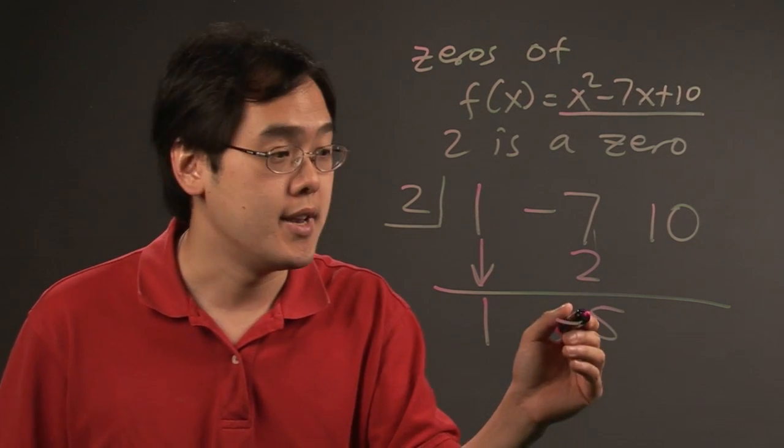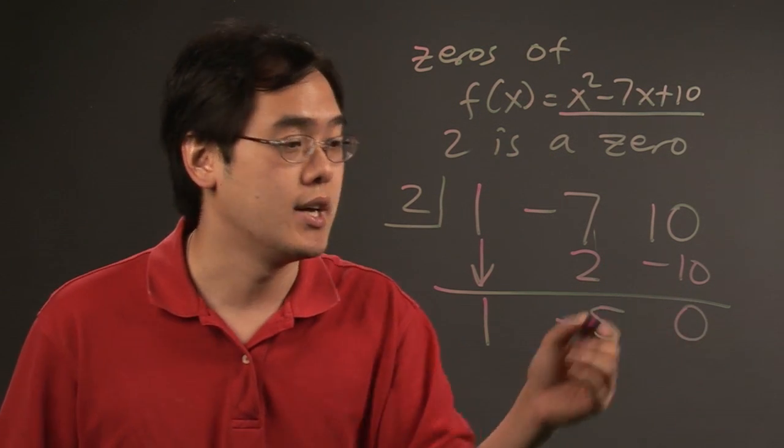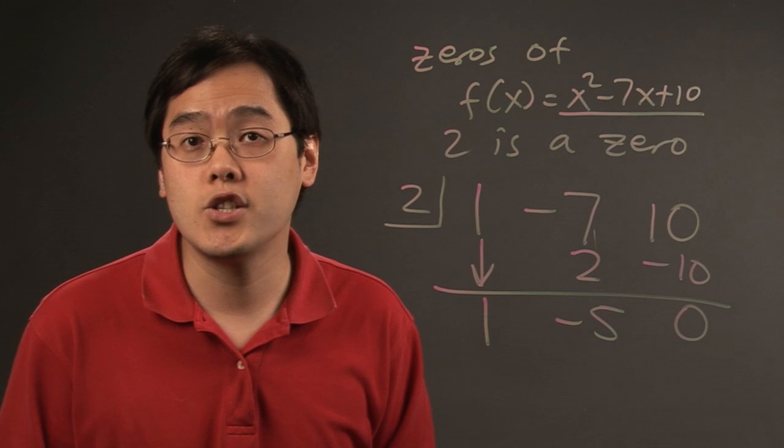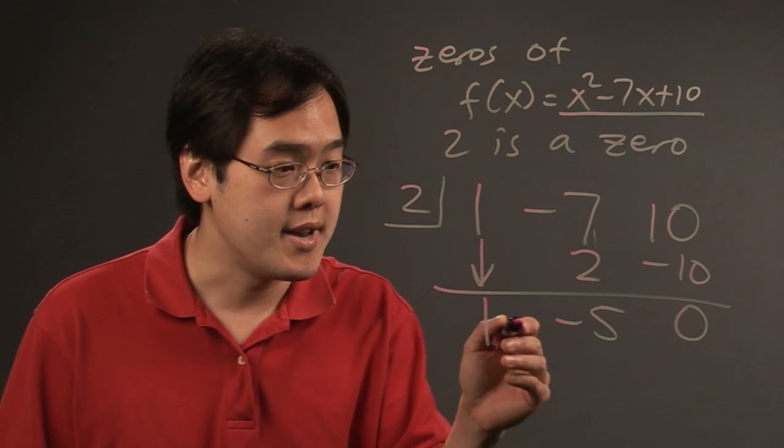Then you repeat. Negative 5 times 2 is negative 10, and 10 minus 10 gives you zero. In synthetic division, when you're asked to find zeros, you should always have zero as the last number because that's going to be a zero remainder.